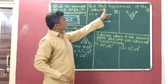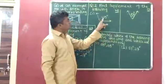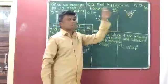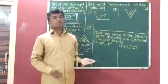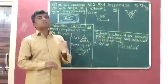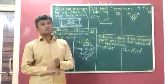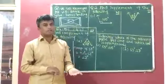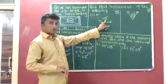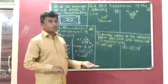Question number 2: find the supplement of the following. Here we have to find the supplement of 105 degrees and the supplement of 87 degrees. If you want to identify the supplement of any angle, you have to subtract the given angle from 180 degrees. Why 180 degrees? Because the sum of measures of two supplementary angles is 180 degrees. If you want to identify the supplement of 105 degrees, you have to subtract 105 degrees from 180 degrees.